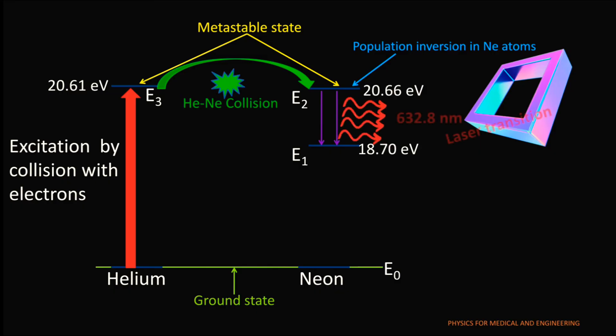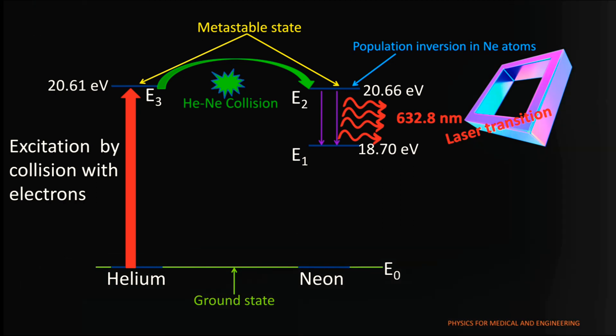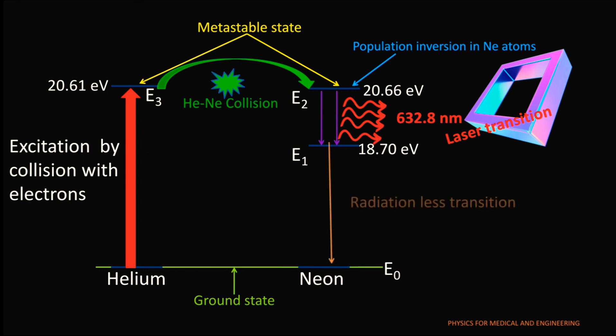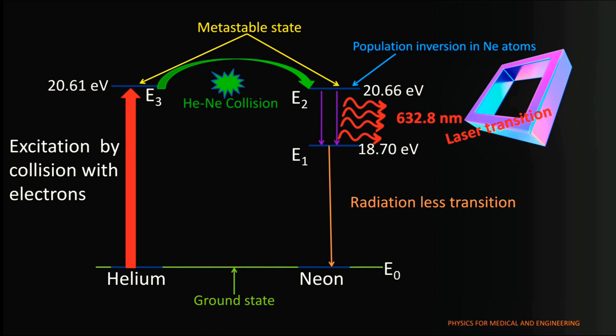This stimulated transition from 20.66 electron volt level to 18.70 electron volt is the laser transition. The neon atoms are brought to the ground state from the state E1 through the collision with the walls of the tube, hence the final transition is radiationless.